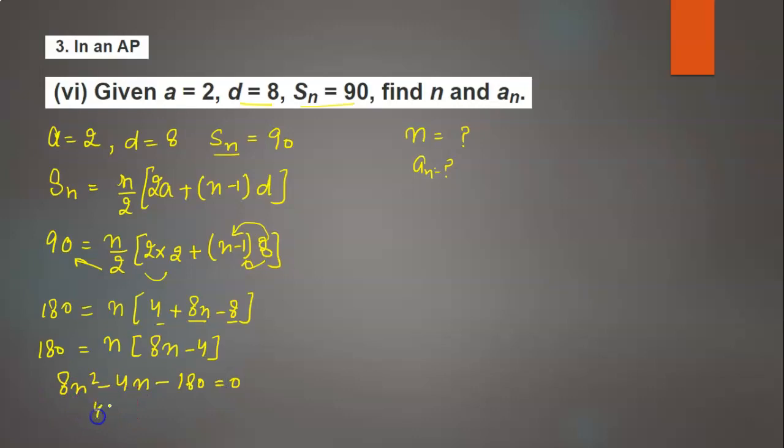Now take common 4. So it will be 4 times (2n² minus n minus 45) equals 0. Here 4 is shifted to the right-hand side, it will be 0. So 2n² minus n minus 45 equals 0.